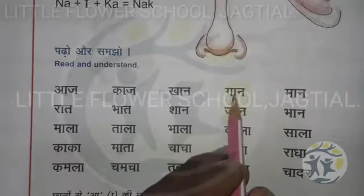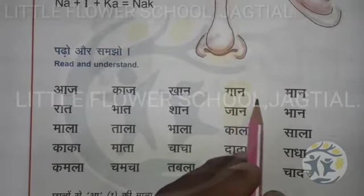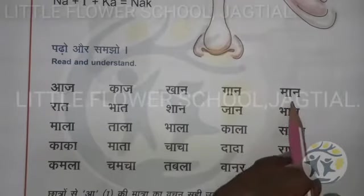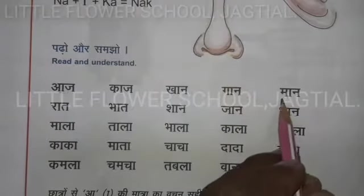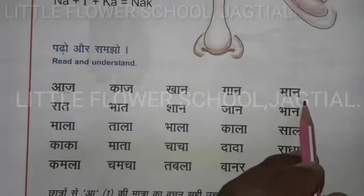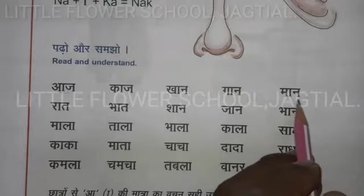Gaan: ga, place aa matra, ga, place na equals gaan. Maan: ma, place aa matra, ma, place na equals maan.